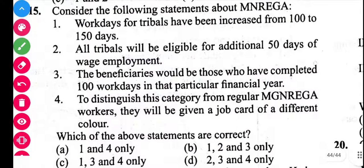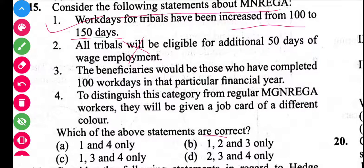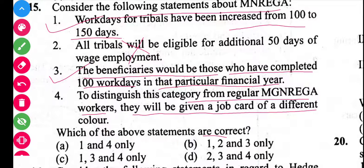Next question is related to MGNREGA. Work days for Tribes have been increased from 100 to 150 days — correct. Not all Tribes are eligible; only those registered under the Forest Rights Act 2006 are eligible for the additional 15 days of employment. The beneficiaries must have completed 100 work days in that financial year. These Tribe workers are distinguished from regular MGNREGA workers and given job cards of a different color. Statements 1 and 3 are correct, so the answer is C.